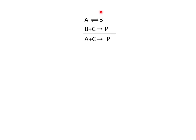We've been using this mechanism as our test case, and we've seen that the pre-equilibrium is distinguishable from the steady-state case because there is a different dependence on the amount of C in the system. In the pre-equilibrium case, you will recall, we found that the rate was equal to K2 times the equilibrium constant for the first step times the concentration of A times the concentration of C.